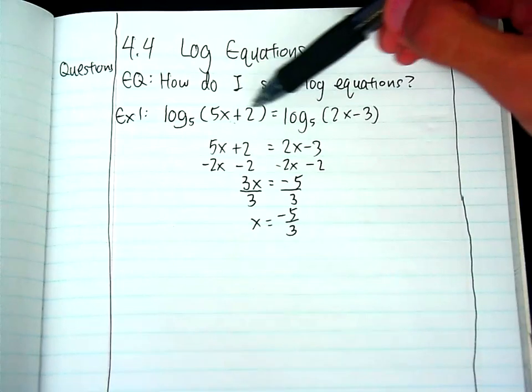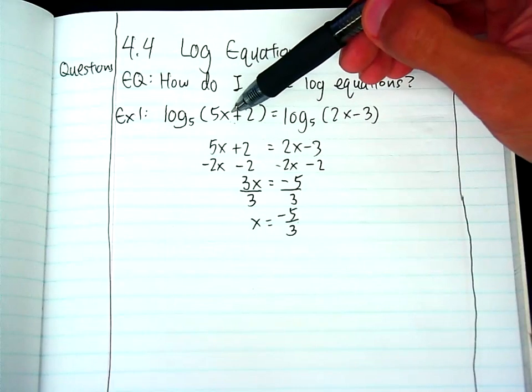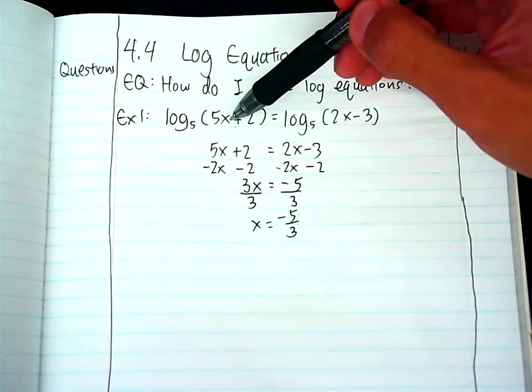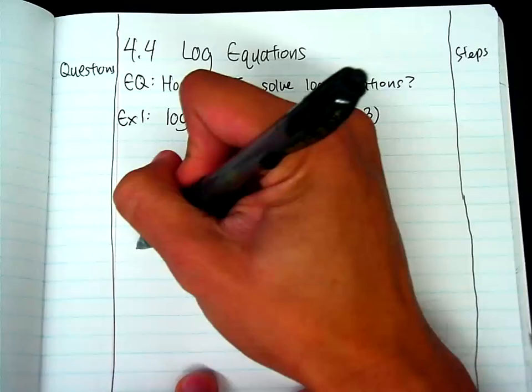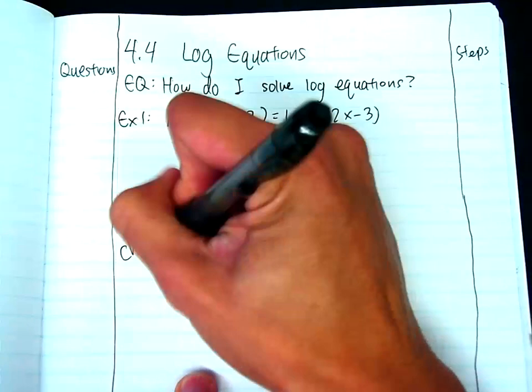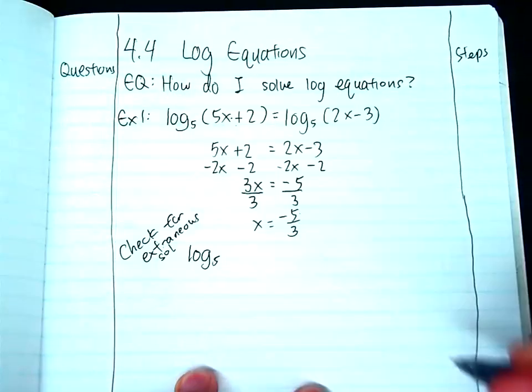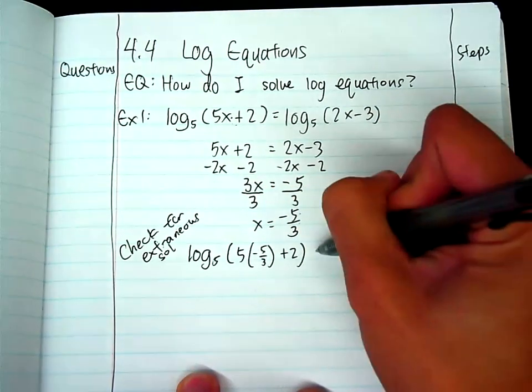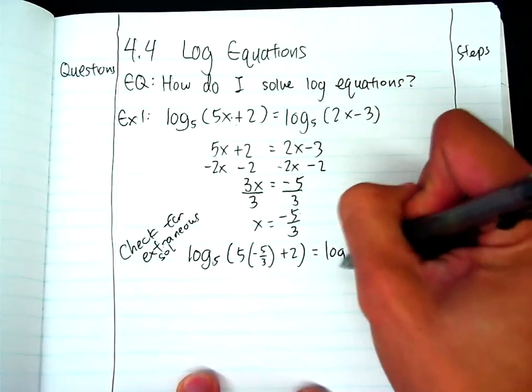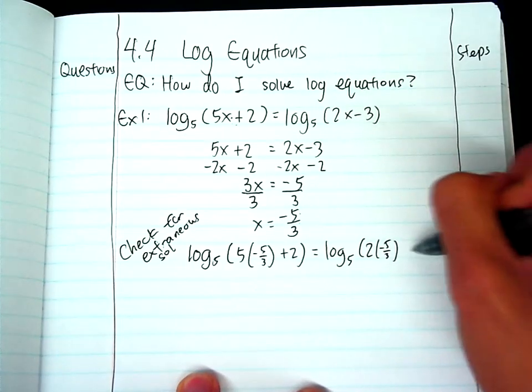What would make it a good practice would be you would start plugging in just to make sure that you don't get a negative value in here because you cannot take a log of a negative number. So if I plug in x into here, I will get, just to check for extraneous solutions, log base 5 of 5 times negative 5 thirds plus 2 equals log base 5 of 2 times negative 5 thirds minus 3.